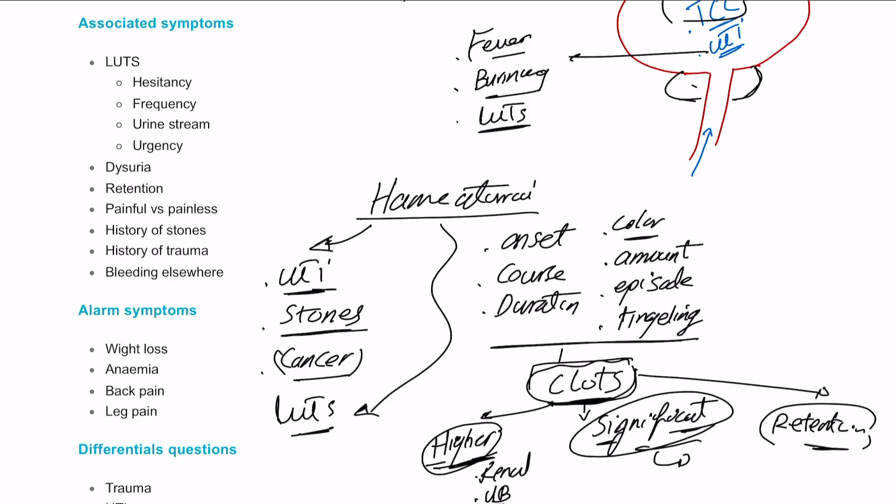As a summary for the main presenting complaint: ask about hematuria — when and how did it start, any trauma, how many attacks, how did the urine look, the amount, any tingling sensation, any blood clots, any other symptoms, high temperature, burning sensation while passing urine, previous renal stones, weight loss, decrease in appetite, and lower urinary tract symptoms.